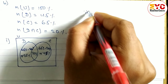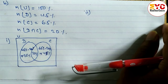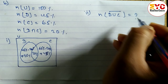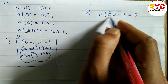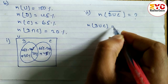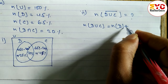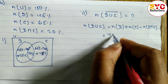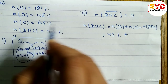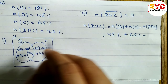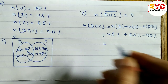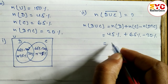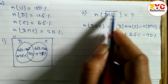In number two, we have to find the percent of people who don't like both festivals. Don't like both means n(D ∪ C) complement. To find the complement, first we find n(D ∪ C). The formula is n(D) plus n(C) minus n(D ∩ C). n(D) is 45, n(C) is 65, n(D ∩ C) is 20. So: 45 plus 65 minus 20 gives us 90 percent.